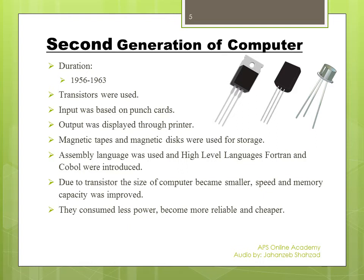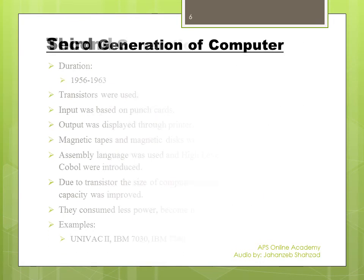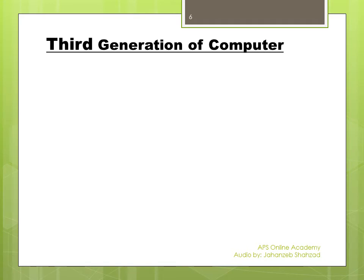Because vacuum tubes were replaced by transistors, the second generation computers consumed less power. They also became more reliable and cheaper. Third generation of computers: the time duration was 1963 to 1971.